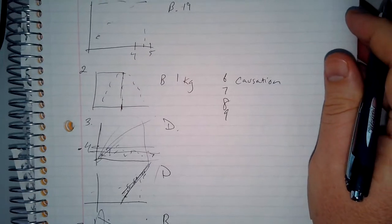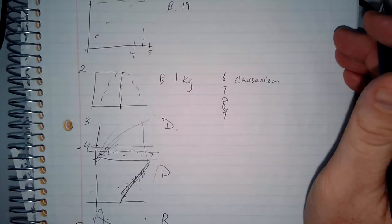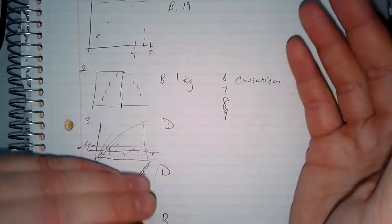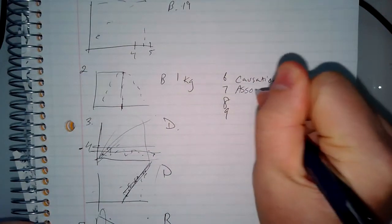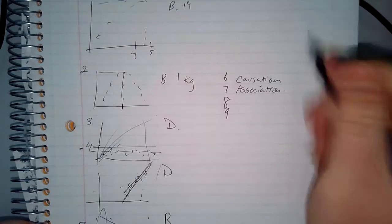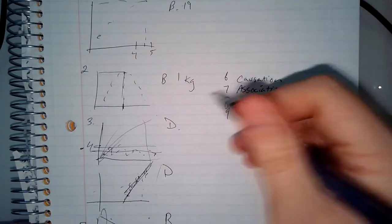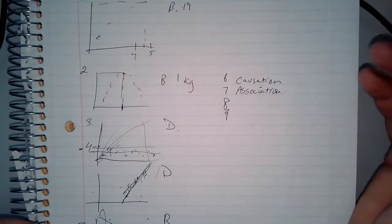Number seven: as the average cost of tuition increases, the number of electric cars in the United States also increases. I don't think that's a direct cause — where's the connection? I would say that is an association. It's a sign of technology and time: time and technology are increasing college tuition and also increasing the number of electric cars.